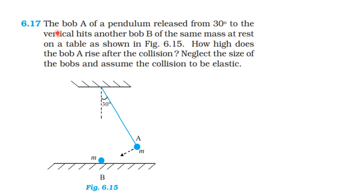The bob A of a pendulum is released from 30 degrees to the vertical. It hits another bob B of the same mass at rest on a table, as shown in the figure. How high does bob A rise after the collision? Neglecting the size of the bobs and assuming an elastic collision between two equal masses in one dimension, velocity exchange takes place.